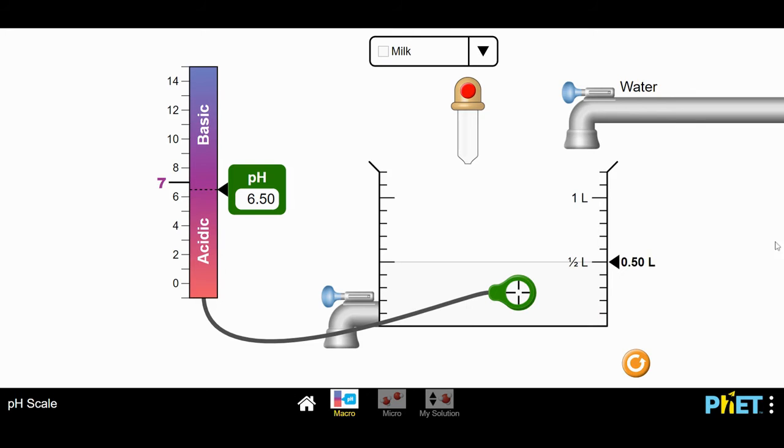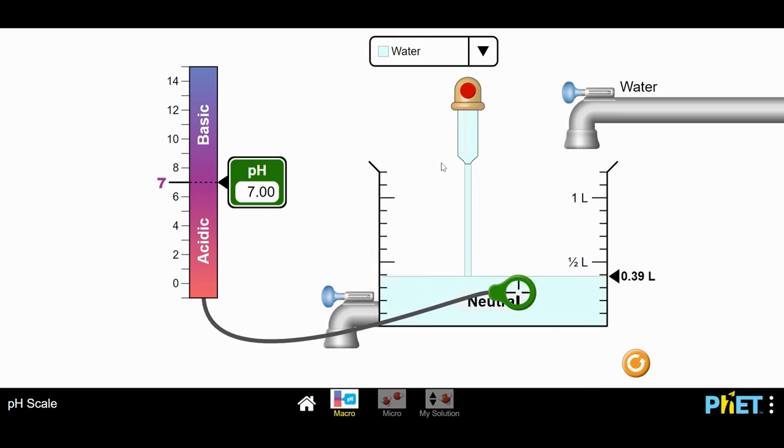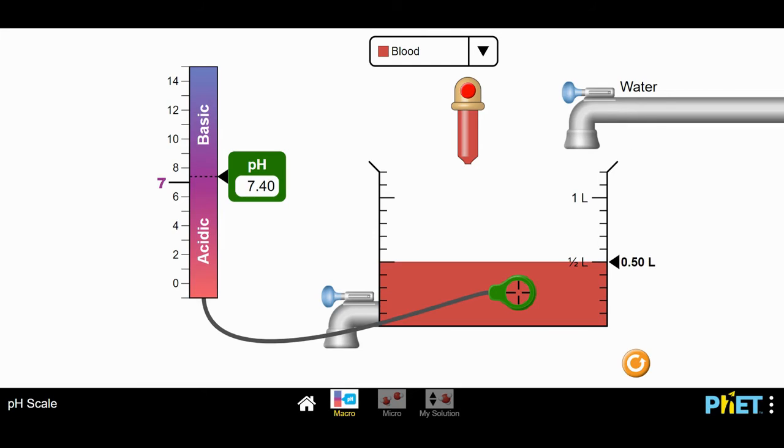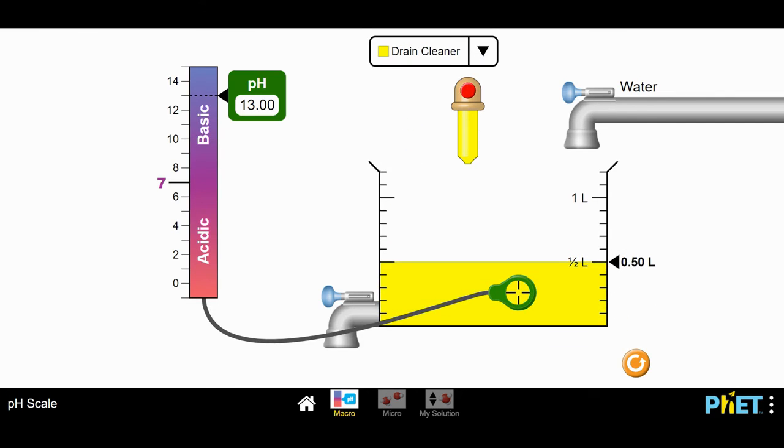Milk, 6.5. Water, remember, was 7. Blood, spit has a pH of 7.4. Blood also has a pH of 7.4. So two body fluids have the same pH, 7.4. Hand soap has a pH of 10. And drain cleaner has a pH of 13.